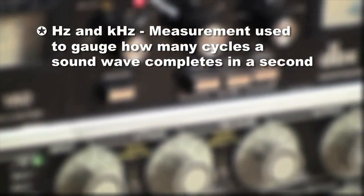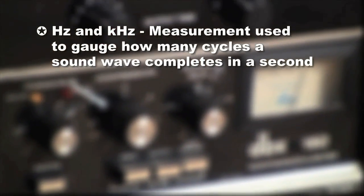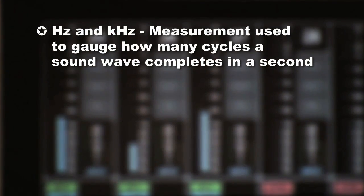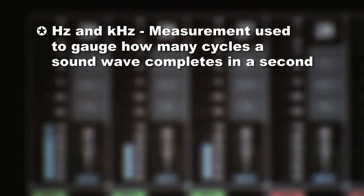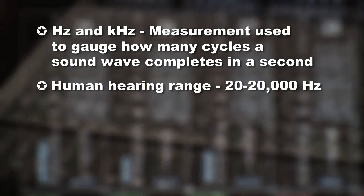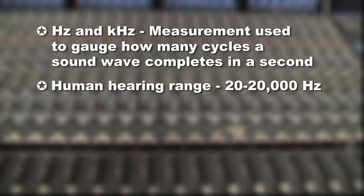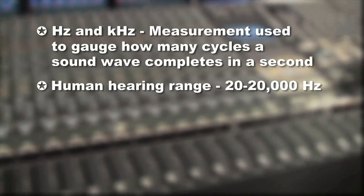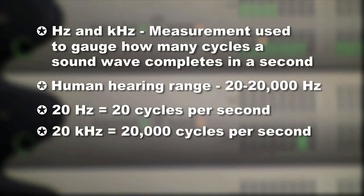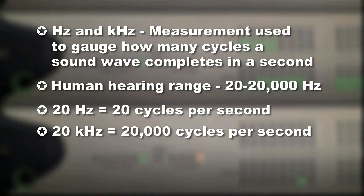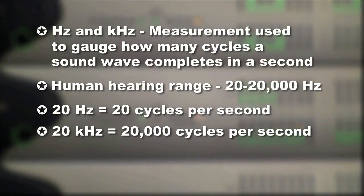We talked earlier of hertz and kilohertz. This is the measurement we use to gauge how many complete cycles our sound wave completes in a second. So that range of hearing, 20 hertz being the lowest, 20 kilohertz being the highest, equates to 20 complete wave cycles a second, or 20 hertz, up to 20,000 complete wave cycles a second, or 20 kilohertz.